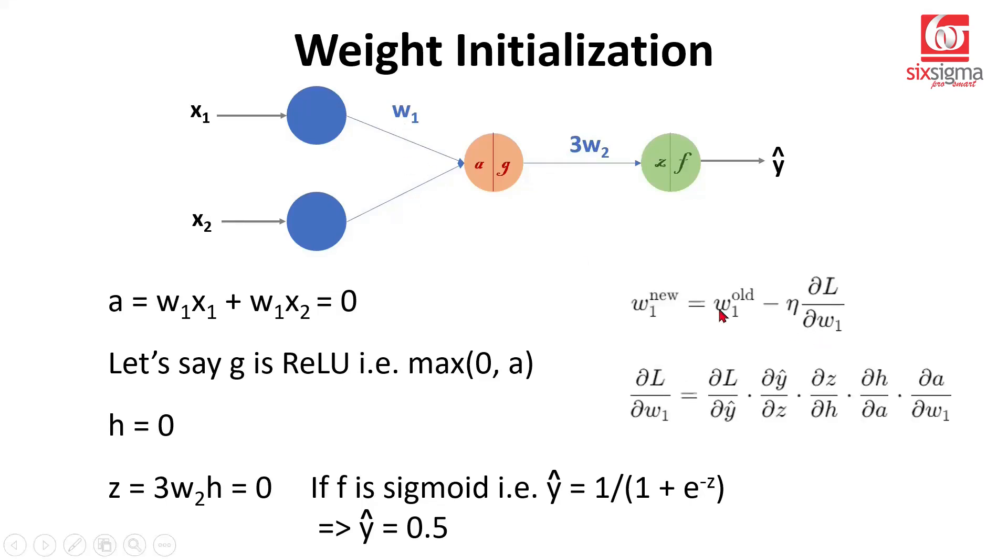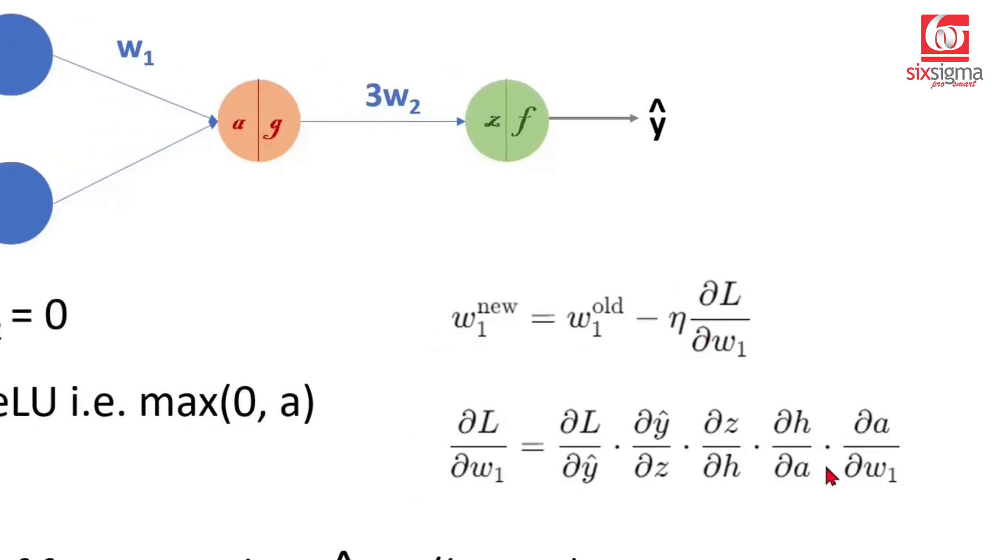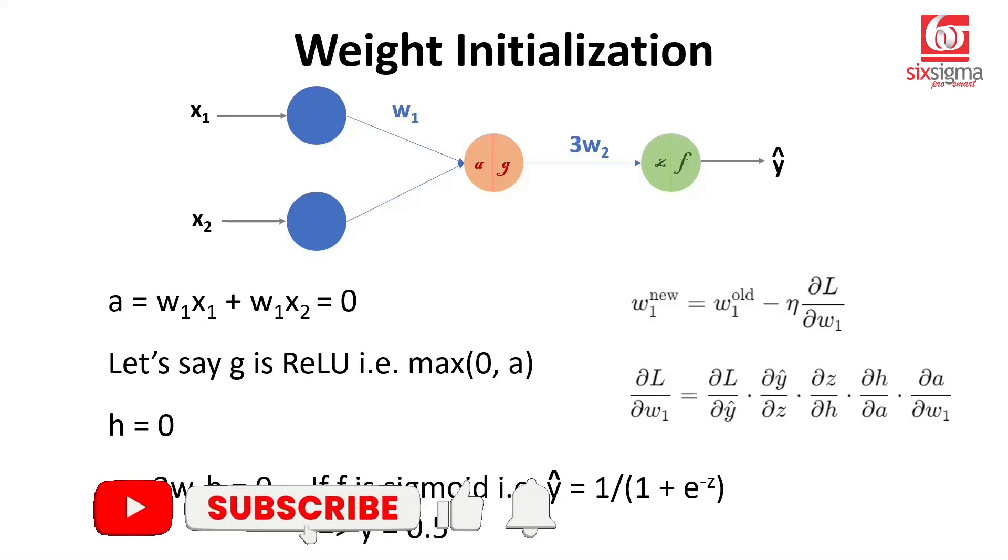Let's look back at the first set of connections. This would be again W1 old minus eta times ∂L by ∂W1, a relatively longer expression. But again, in this case, a lot of these terms are zeros to begin with. So eventually, if we go about computing this, this again would turn out to be zero. And this becoming zero again suggests that W1 new is equal to W1 old. So two key takeaways. Don't initialize the weights as equal because that leads to a symmetry breaking problem. Within the scenario of equal weights, initializing all the weights as zero is even worse because in that case, the weights don't get updated at all.